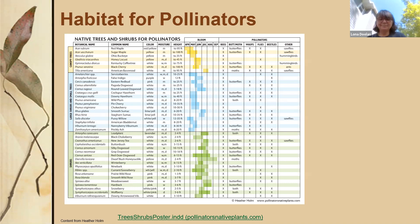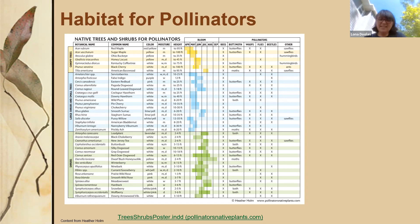Not every yard is big enough to hold a black cherry tree, but the idea is that different native trees have a bloom span from March to September and they create their own aerial garden.